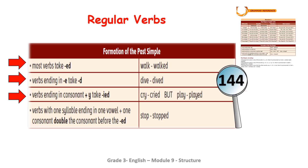The third tip: verbs ending in consonant plus 'y' take 'ied.' Look at 'cry' — it ends with 'y' and 'r' comes before 'y,' which is a consonant, so we change the 'y' to 'i' and add 'ed.' But what about a verb like 'play'? 'Play' ends with 'y,' but what comes before the 'y'? A vowel — 'a'! That's why we keep the 'y' and just add 'ed': 'played.'